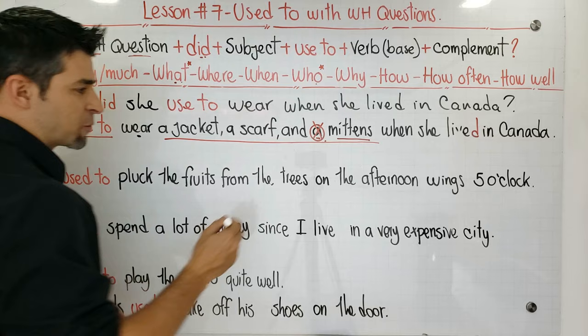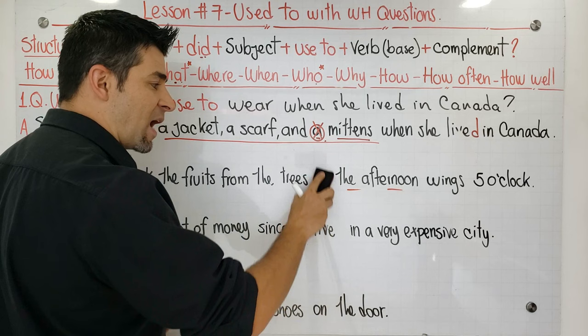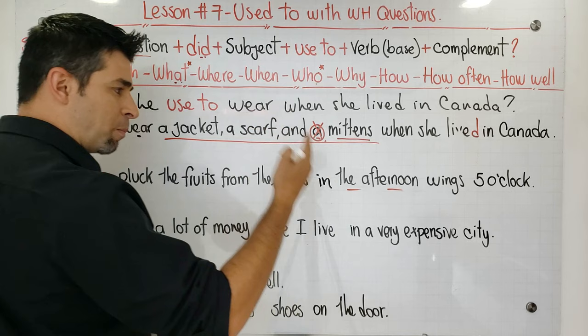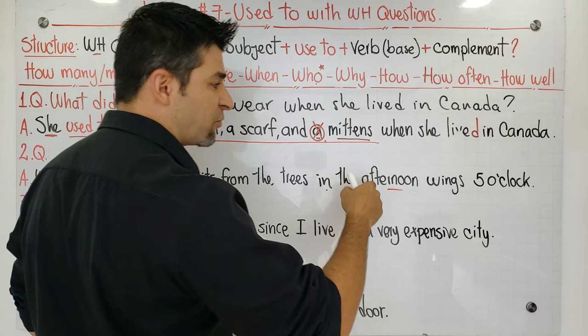The first mistake is the preposition 'on' — because we are talking about a part of the day. For parts of the day, we use 'in,' so it should be 'in the afternoon.' The second mistake is the preposition before the time. 'On' or 'in' are not correct here — for specific times, we use 'at.' So it should be 'at five o'clock.'